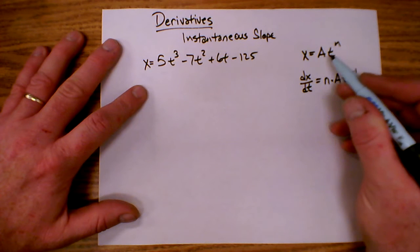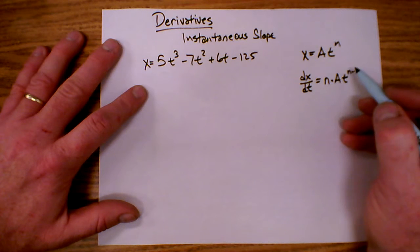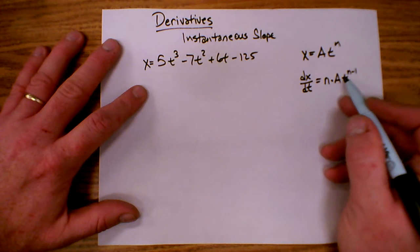So derivative: take the exponent, bring it down in front, multiply, and then reduce the exponent by 1. So n times a, t to the n minus 1.